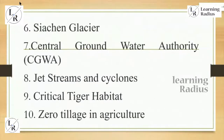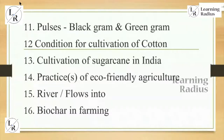Sea urchin glacier is static; central groundwater authority is current affair; jet streams and cyclones relate to physical geography; critical tiger habitat is current affair; zero tillage in agriculture is current affair. In the next five, again three current affairs, one static, one physical — the same pattern repeated. For the last six: pulses black gram and green gram is current affair, condition for cultivation of cotton is current affair, cultivation of sugarcane India is current affair, practice of eco-friendly agriculture is current affairs, river flow is static, biochar in farming is current affairs. So last six — five out of six are current affairs. Total: 3+3+6 = 12 current affairs.